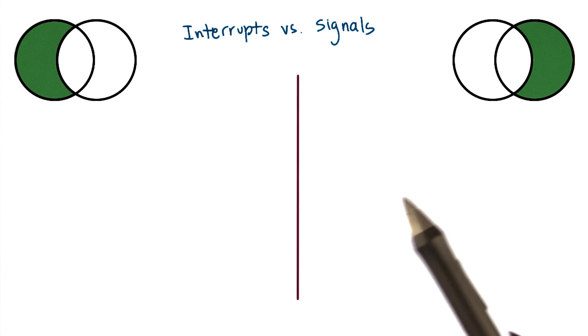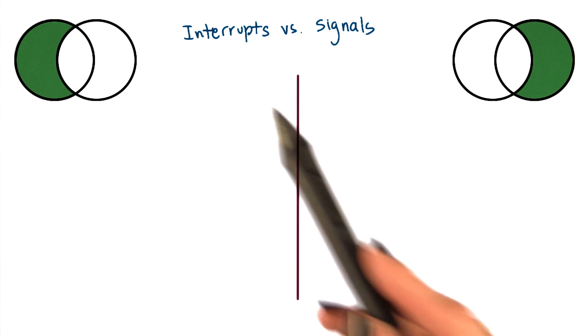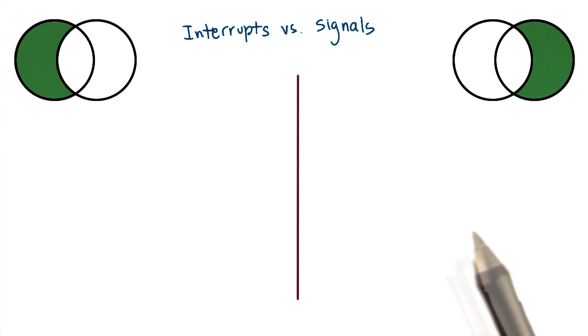In the earlier description of data structures, we mentioned two terms that we have not yet talked about: interrupts and signals. Let's take a moment now to explain these concepts in a little more detail.